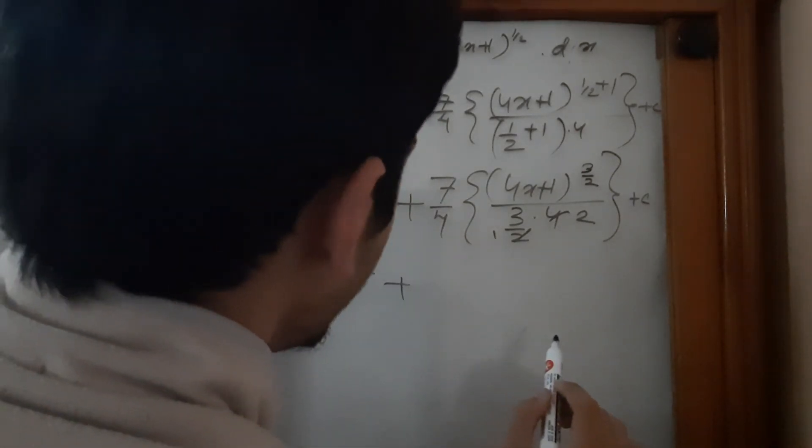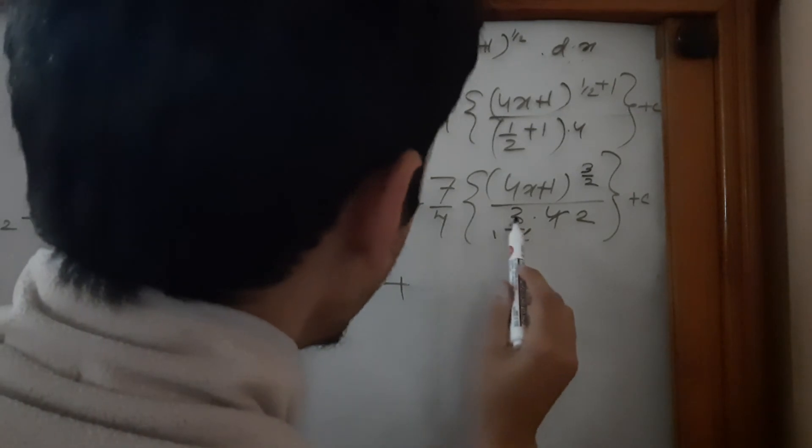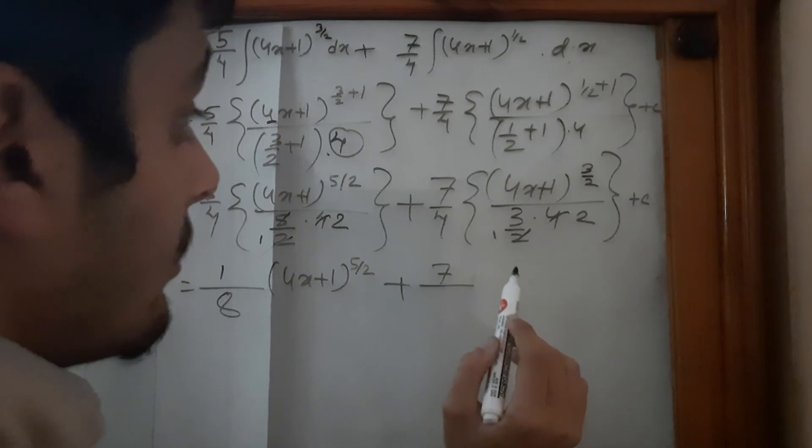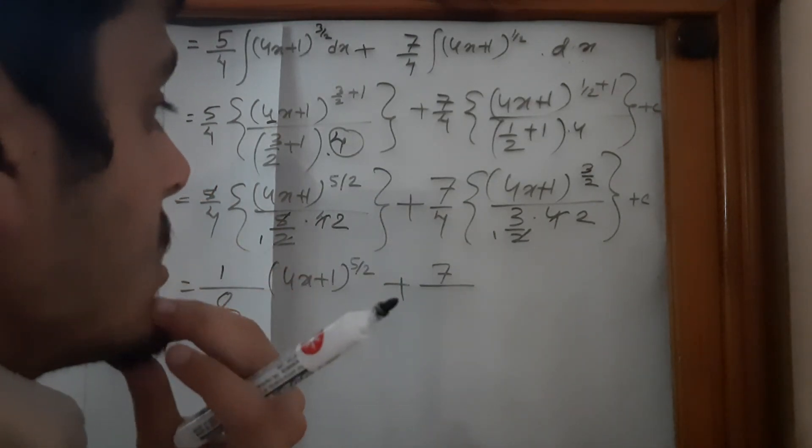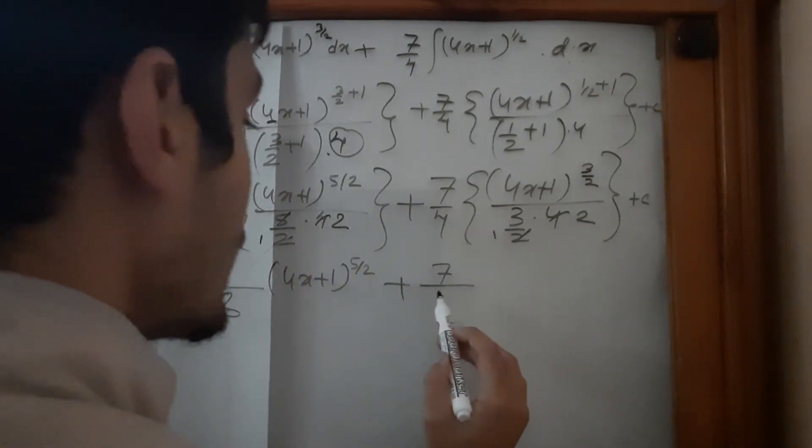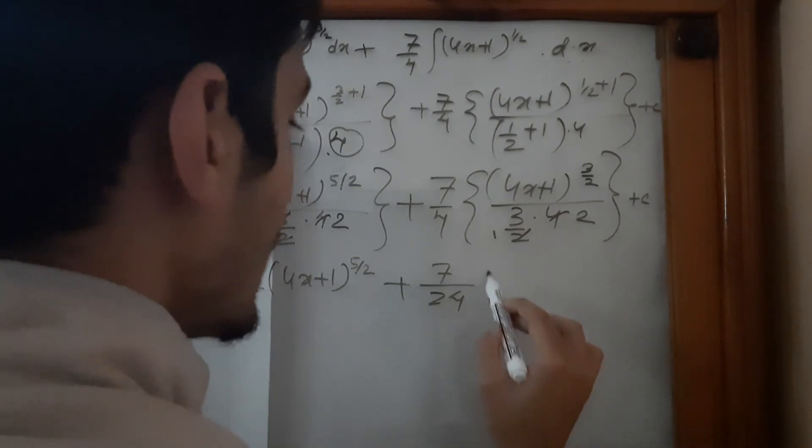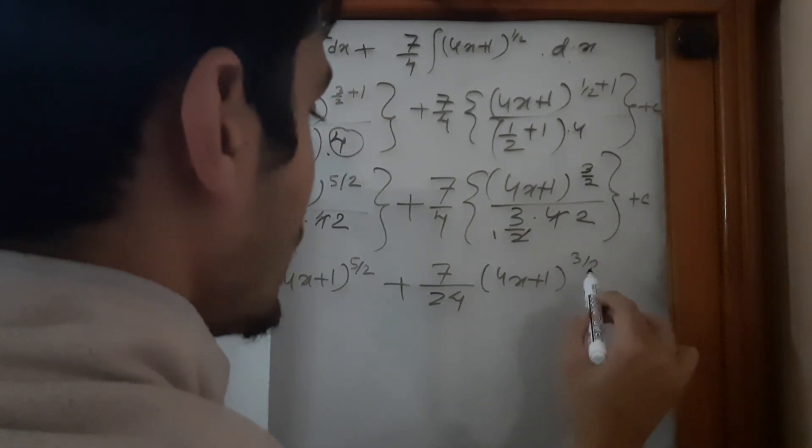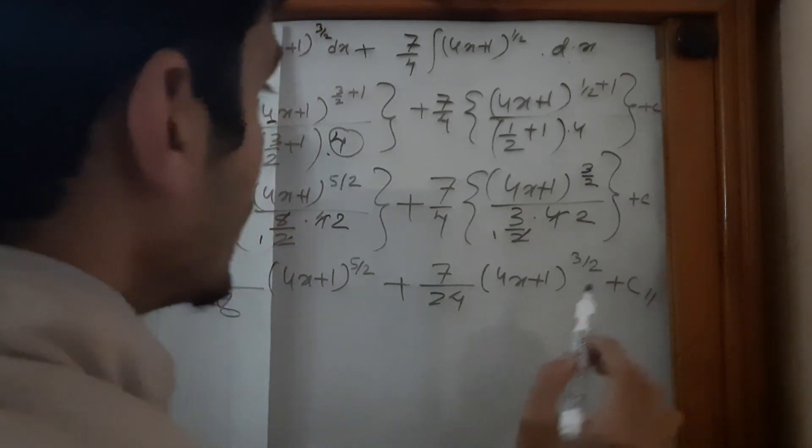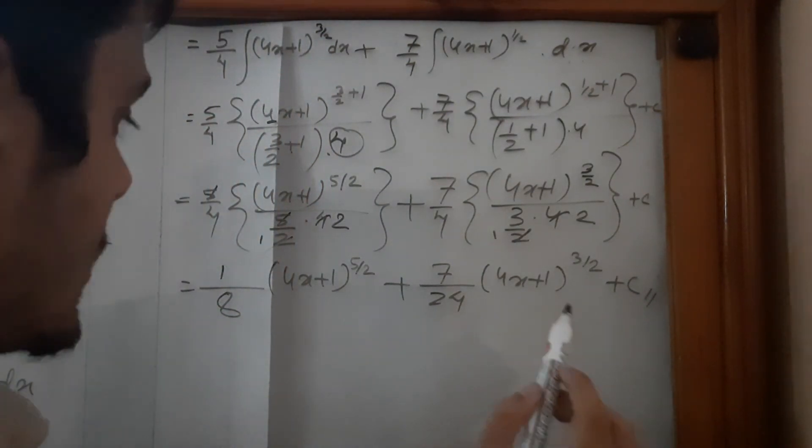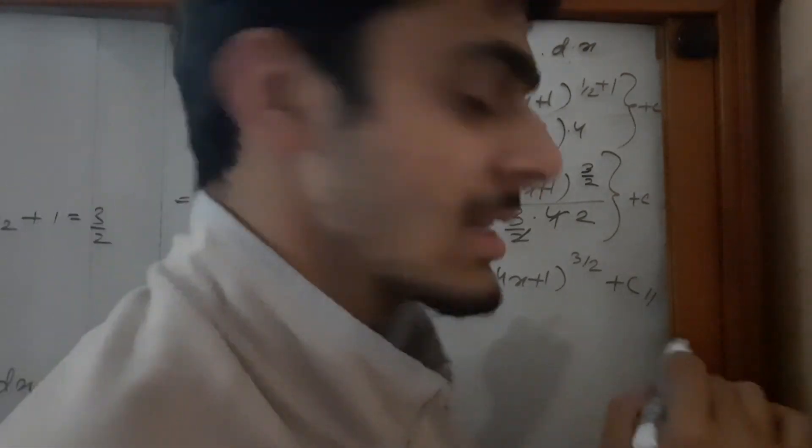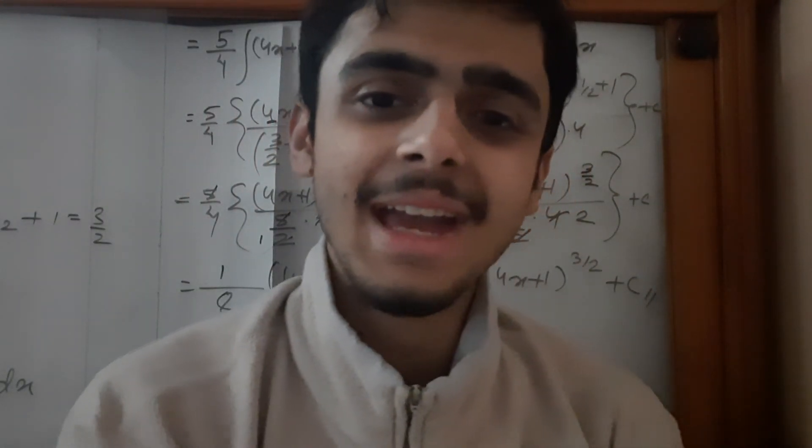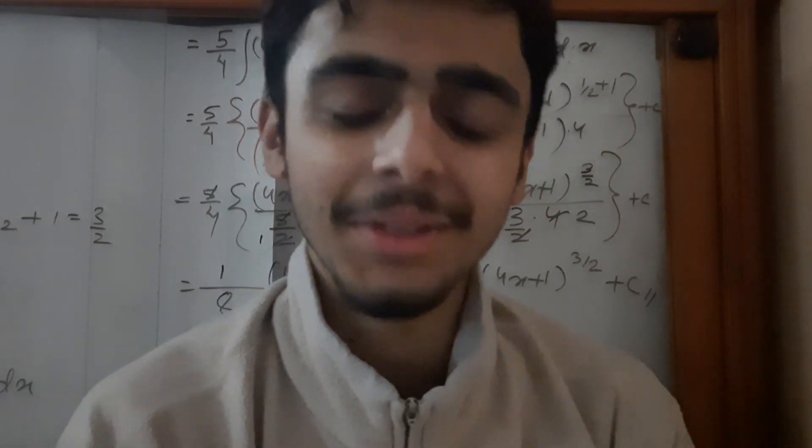Anything cancels 7? No. So it is 7/4 times 3 is 12, times 2 is 24. I think that's it. And here (4x + 1)^(3/2) plus C. Anything wrong? I don't think so. This is the final answer to this question. I hope you learned how to do this and hope to see you in another video. Thank you.